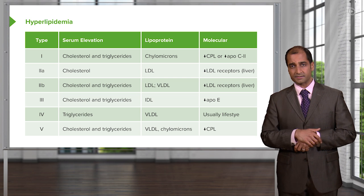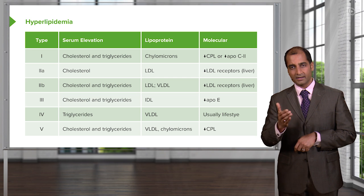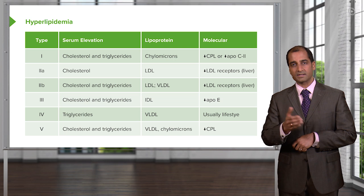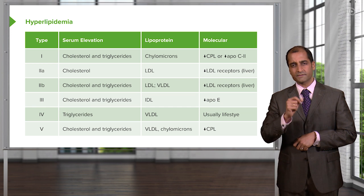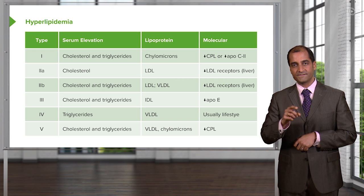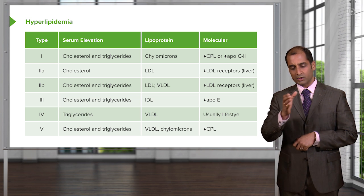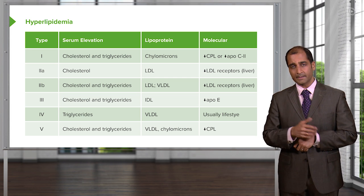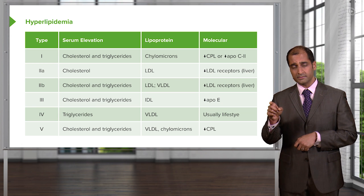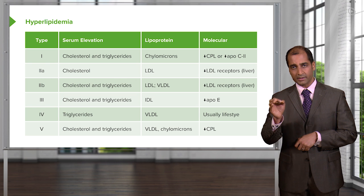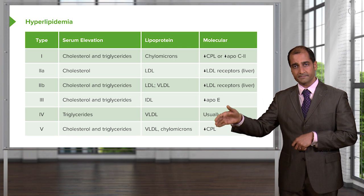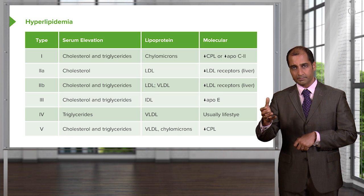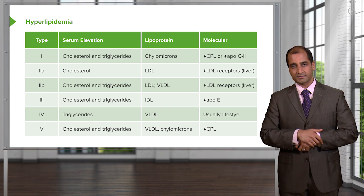The last type we'll discuss is Type 4. Obesity is a huge problem, and with obesity, insulin doesn't work properly — you have insulin resistance. VLDL comes from the liver and requires lipoprotein lipase to convert to IDL. Normally, insulin stimulates lipoprotein lipase to extract triglycerides from VLDL. But in diabetes mellitus, insulin levels drop, lipoprotein lipase doesn't work, and you accumulate VLDL — a secondary hypertriglyceridemia. Welcome to Type 4.